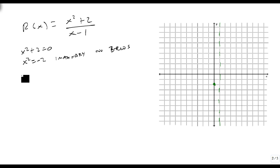For our y-intercept, when we plug in x equals 0, we get 0 squared plus 2 over 0 minus 1, which is 2 over minus 1, so minus 2. We can plot that point right here. Notice that x minus 1 gives a vertical asymptote at x equals 1, which we have drawn here.